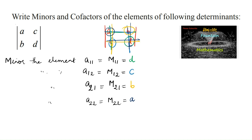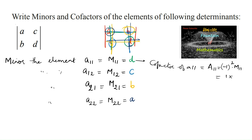The cofactor of element A11: we write it as capital A11, which is equal to (-1)^(1+1) = (-1)^2 = 1, into M11. Since M11 is D, the cofactor A11 is D.